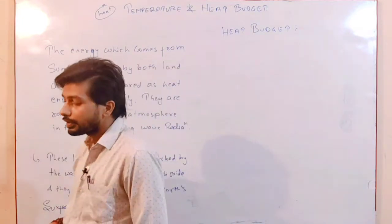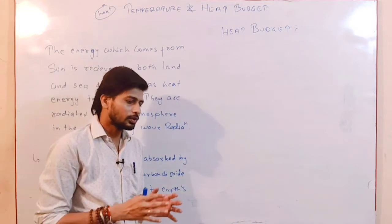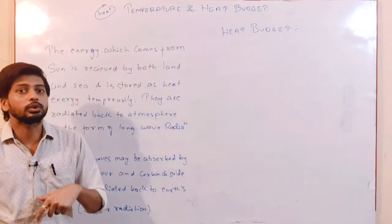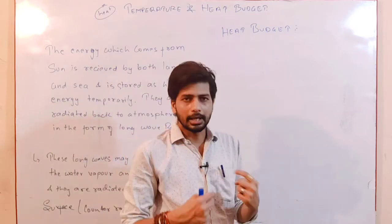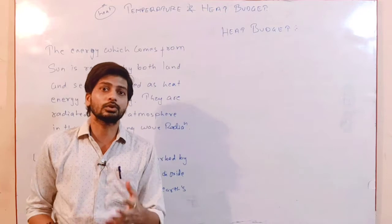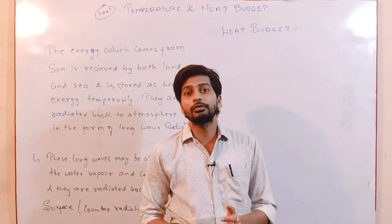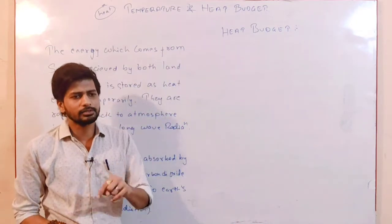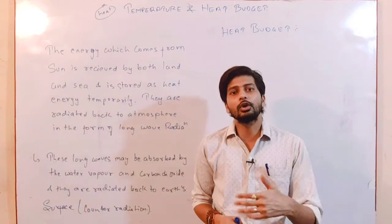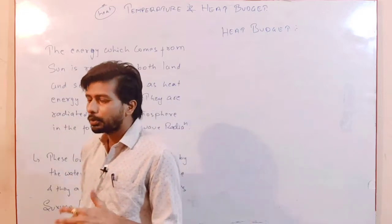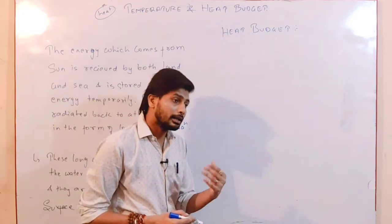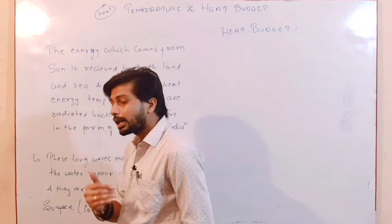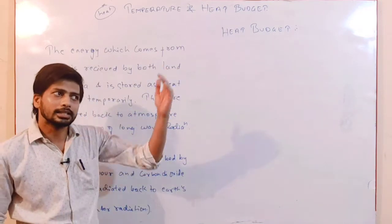Earth is a major source of atmospheric temperature. The major source of energy overall is the Sun, but for atmospheric temperature, while the Sun is a major source, the atmosphere also receives long wave radiations from the Earth. When we look at the heat budget in detail, we'll see by percentage that Earth's radiations heat the atmosphere more than the Sun's radiations.